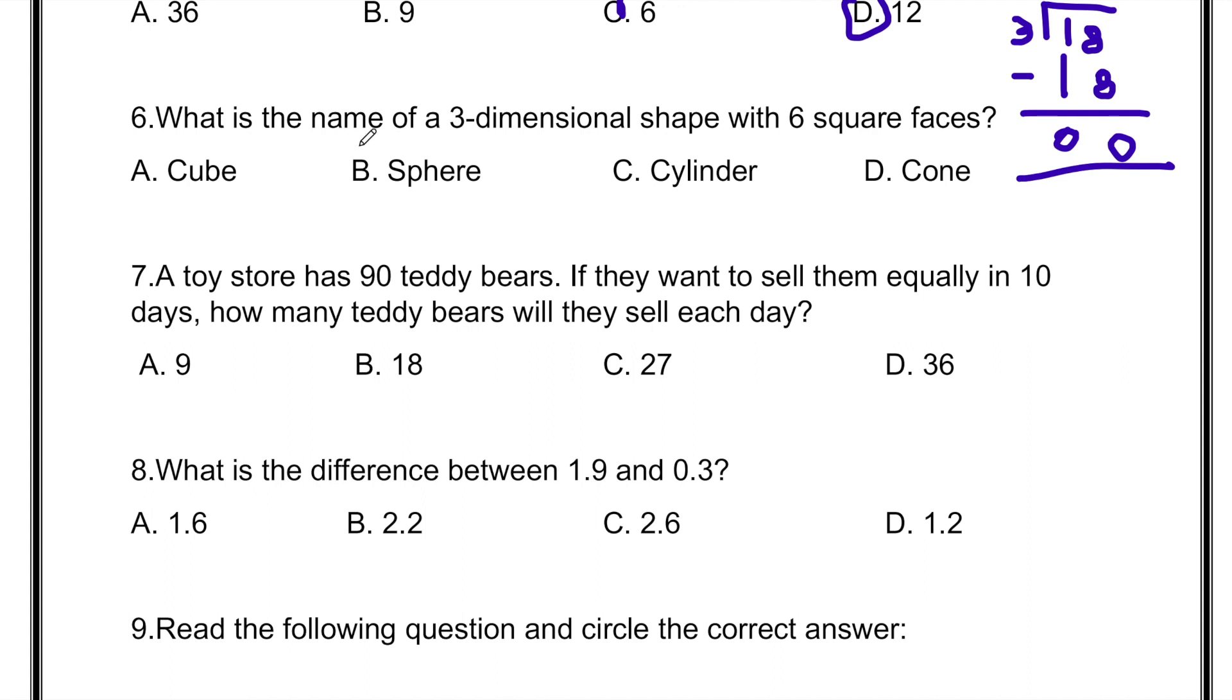What is the name of a 3-dimensional shape with 6 square faces? In all these shapes, all of them are 3-dimensional shapes, meaning 3D shapes. Let's first see Cone. Cone has one flat base, meaning Cone is not the answer. Cylinder has two flat bases and one circular base, and Cone also has one circular base. That means these two are not the answer. Sphere only has one circular base, so that is not the answer. And Cube has six square faces. That means Cube is the answer.